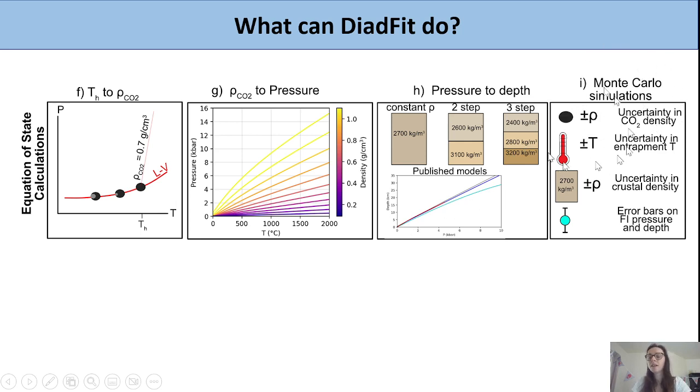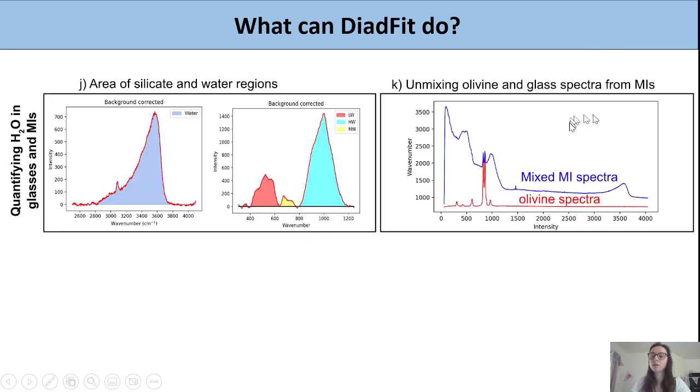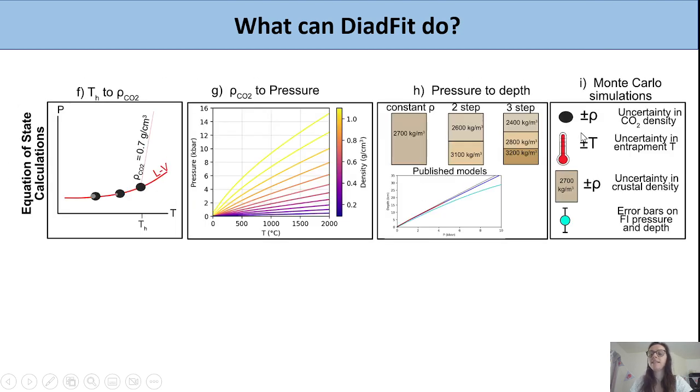A final advance, which I don't think has ever been done before, is you can quantify your uncertainty in CO2 density by repeated measurements on the Raman or microthermometry. You would then estimate an uncertainty in entrapment temperature.